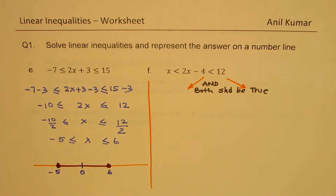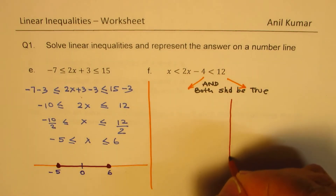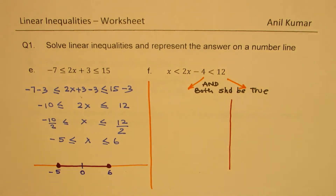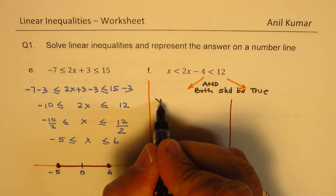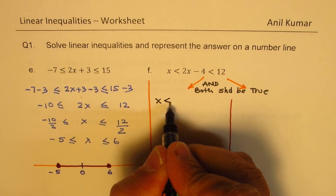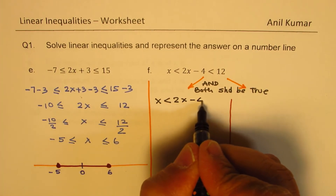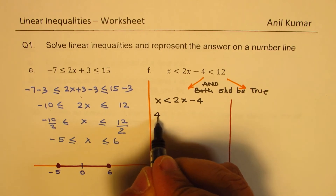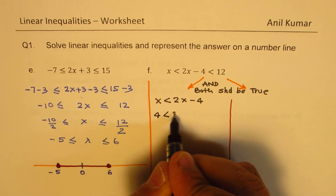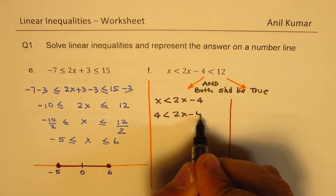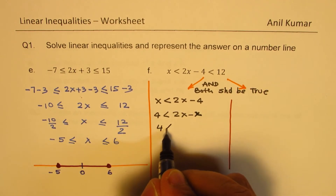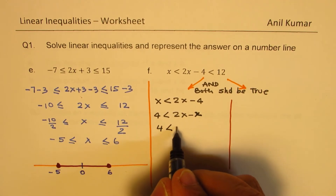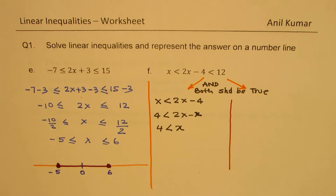We divide into two inequalities and solve individually. The first gives x is less than 2x minus 4. Bringing terms together: 2x minus x, so we get 4 is less than x. That is one solution: x is greater than 4.